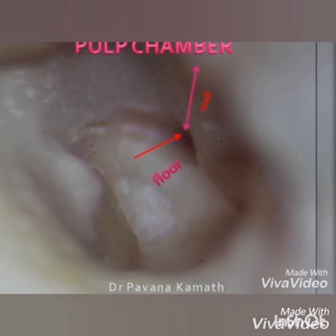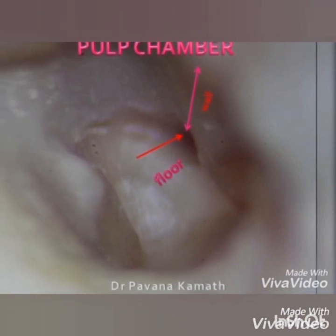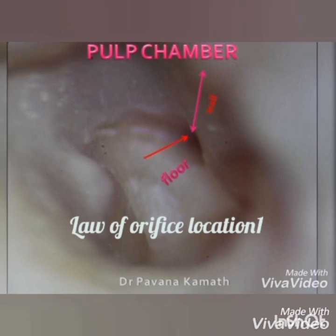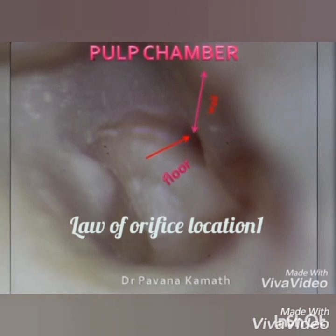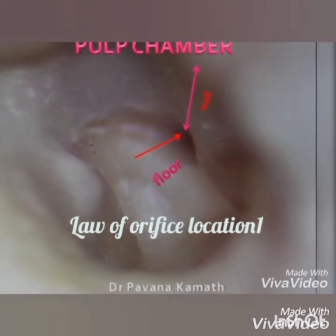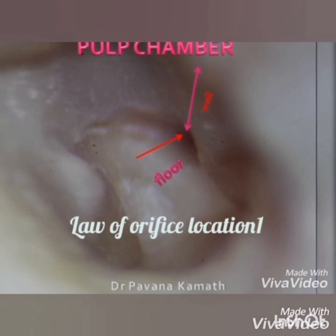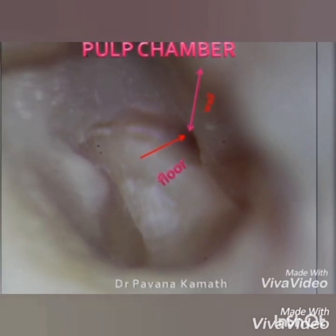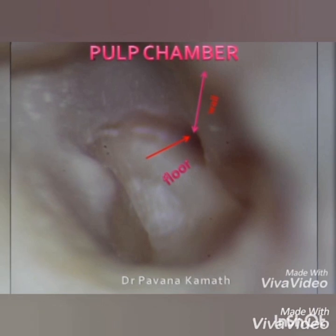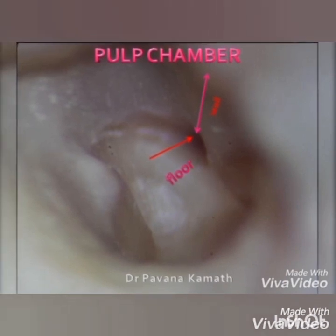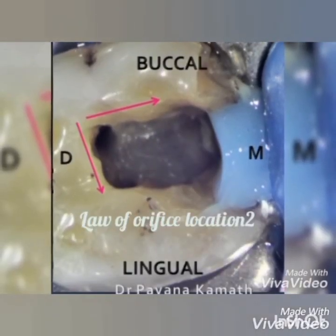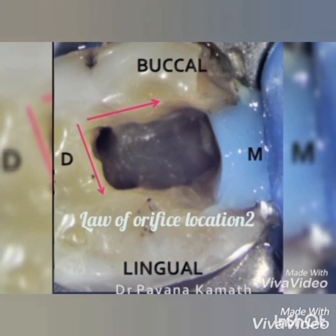The next law is the law of orifice location 1. It says that if we are in the pulp chamber, the orifices are usually located along the line angles — that is, they are located along the junction of the wall and the floor.